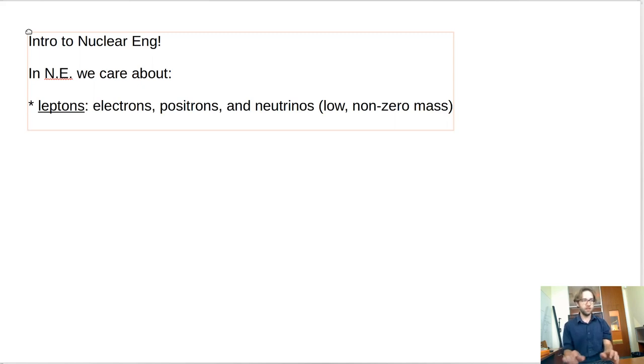And then on the other hand, we have baryons that we care about. This is a subtype of hadron, which if you've heard of the Large Hadron Collider, these are examples of that. So examples include neutrons, which nuclear engineers are largely concerned with, and protons.